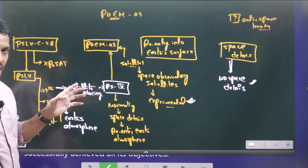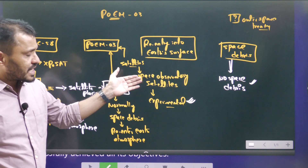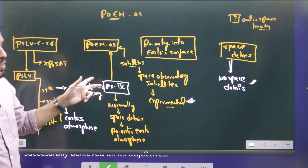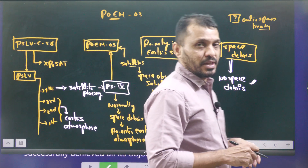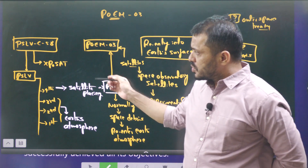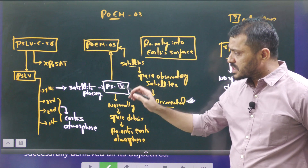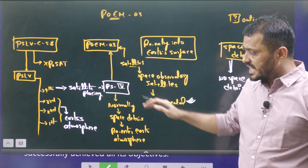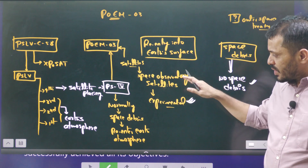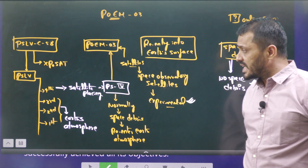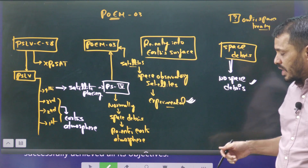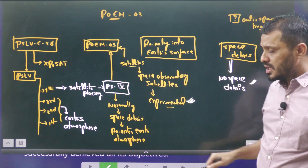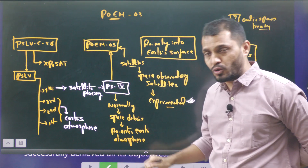So two objectives were achieved through POEM 3: first, we are not leaving any space debris in space; and second, experiments requiring satellites attached to a platform were successfully completed without needing to detach from the surface. POEM 3 was launched through PSLV C-58 along with XPoSat. After XPoSat was placed in orbit, the PS4 fourth stage along with POEM 3 and all attached satellites eventually fell into the ocean — no space debris left.